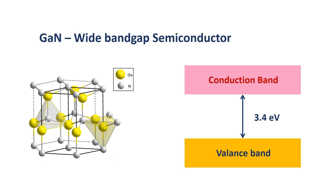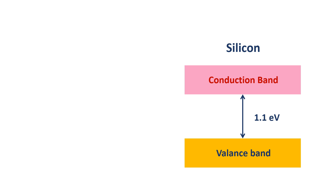Gallium nitride is a wide bandgap semiconductor material. In solids, the band gap is the difference between the valence band and the conduction band. In the case of gallium nitride, this band gap is 3.4 eV, while in the case of silicon it is 1.1 eV.